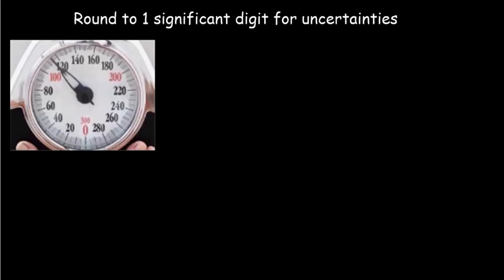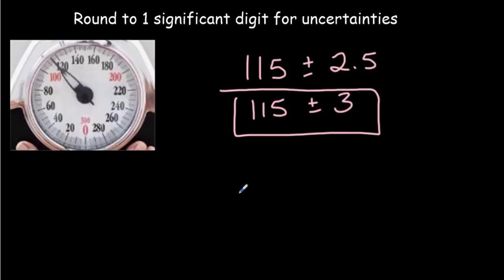Keep in mind that uncertainties are rough estimates. And for that reason, we usually just round them to one significant digit. I'll show you an example of an exception to that rule later. But for most cases, round to one significant digit. So for instance, in this reading here, half the smallest scale division would be 2.5. And our actual reading is 115. We wouldn't leave it that way because our uncertainty right here is two significant digits. And we'd round up to three. So that our result would be 115 plus or minus three units.